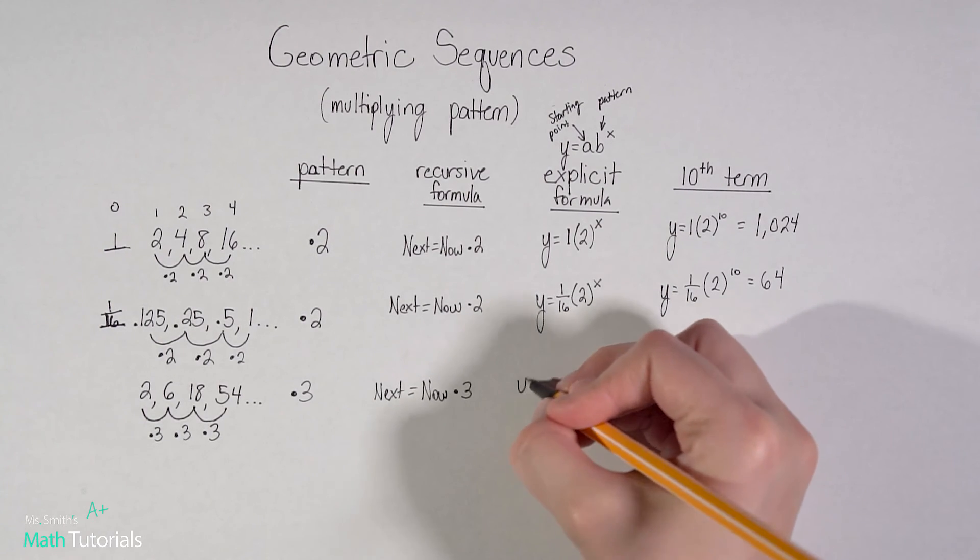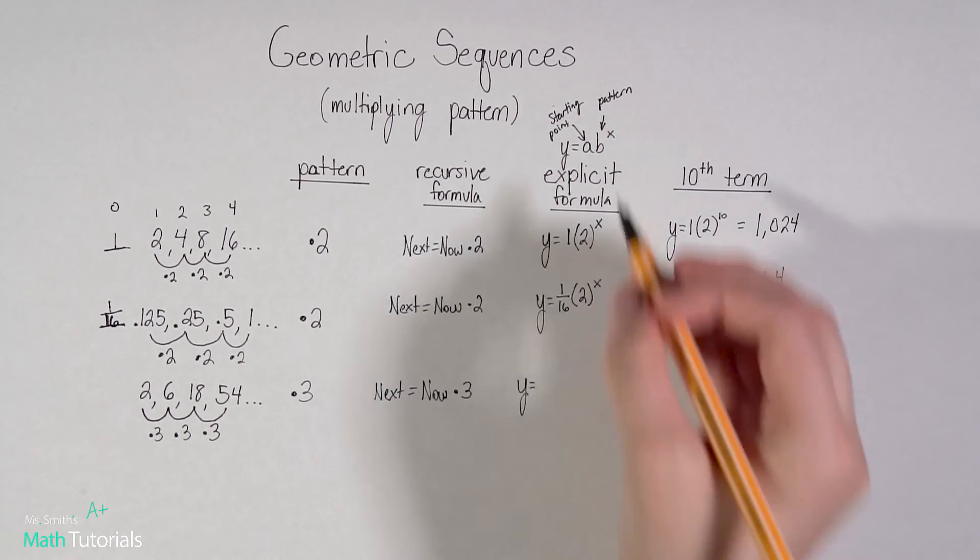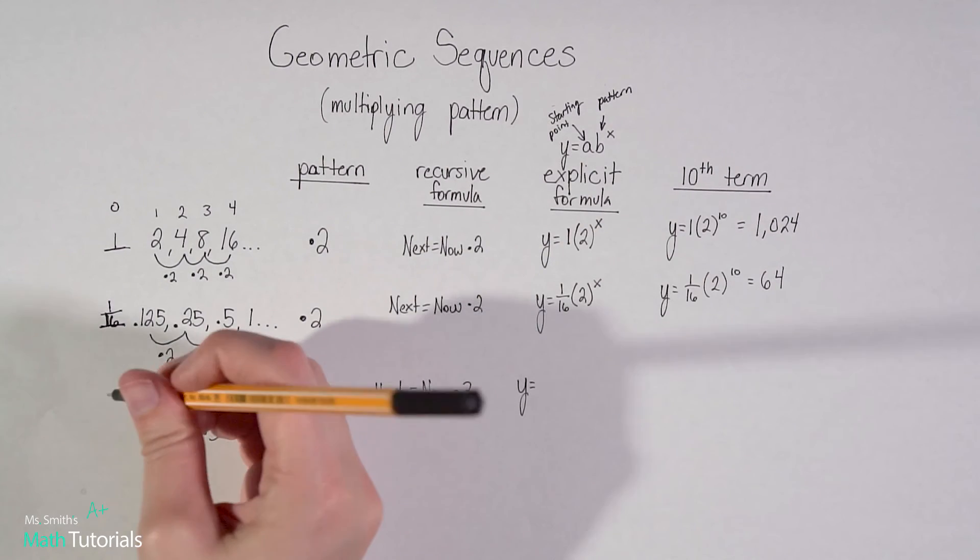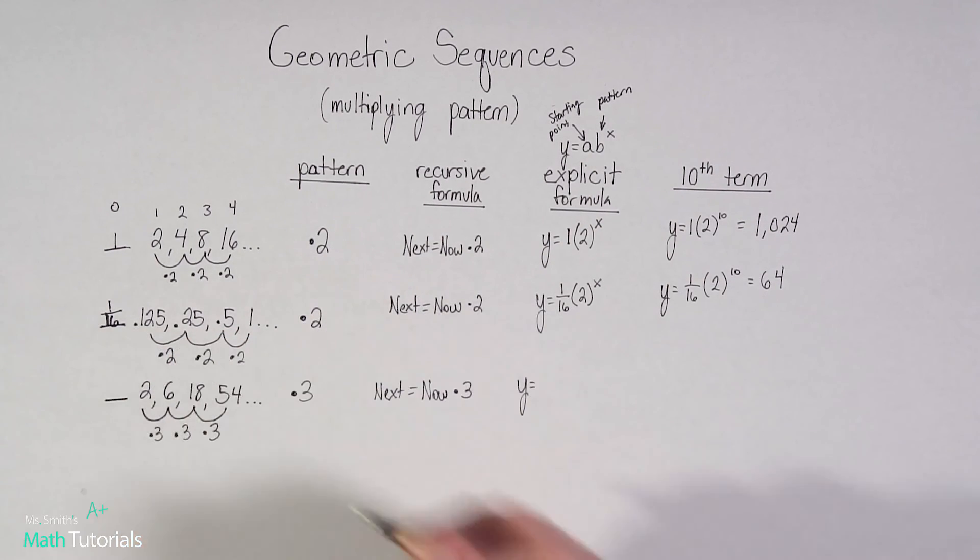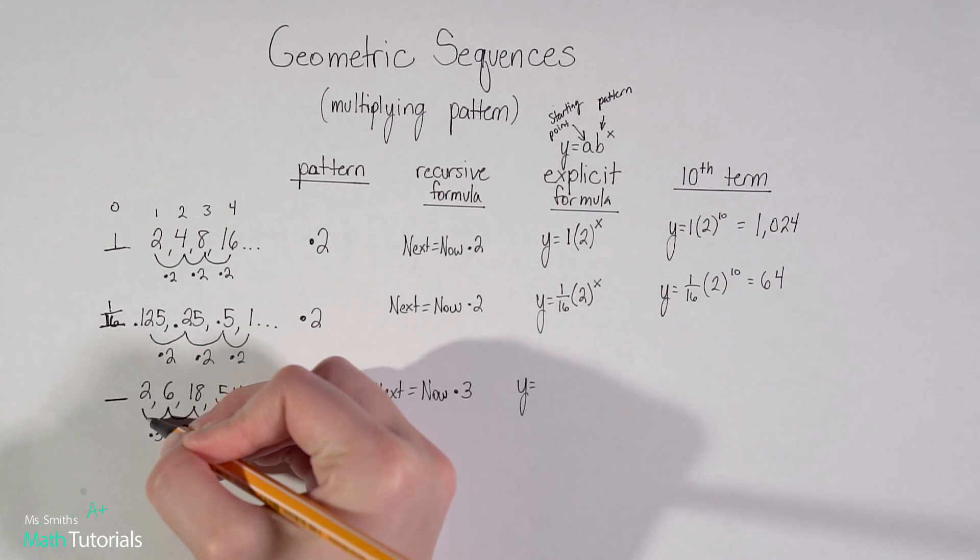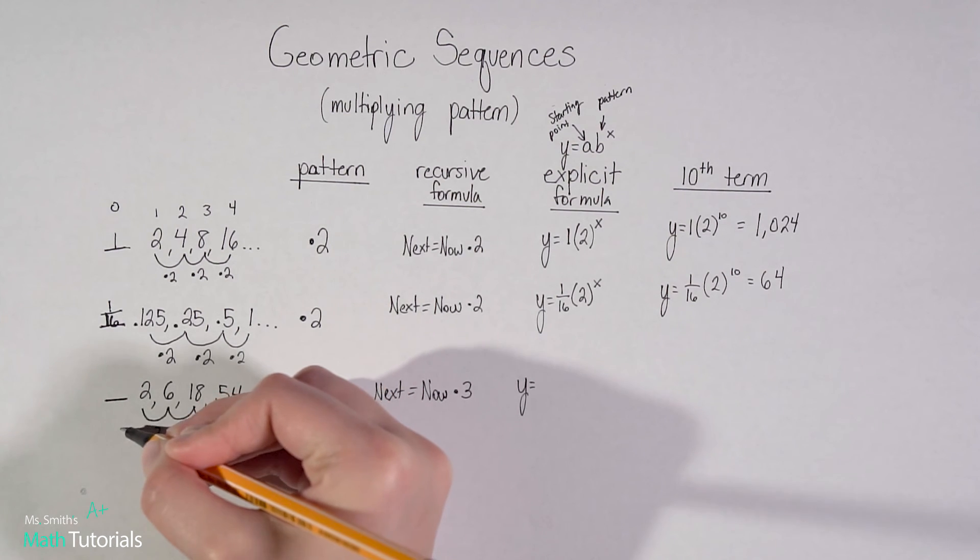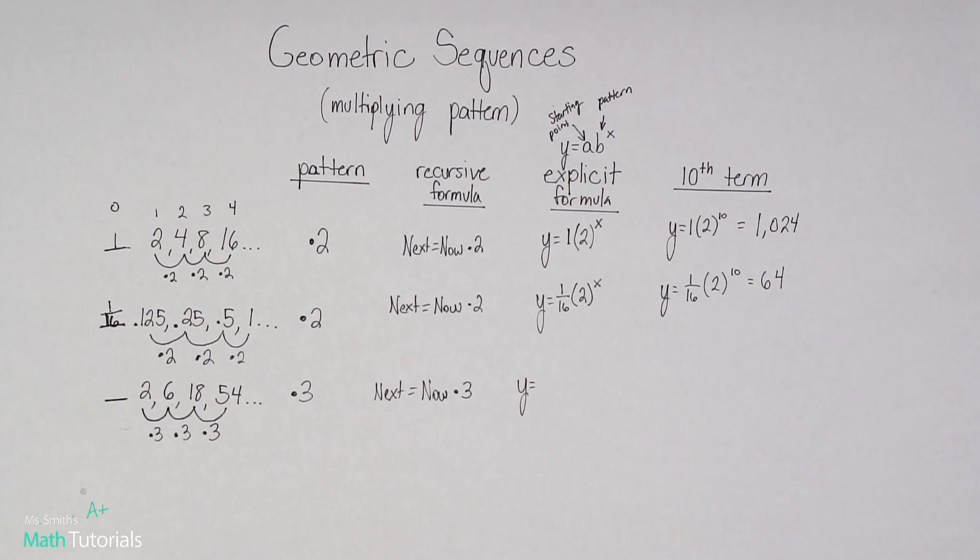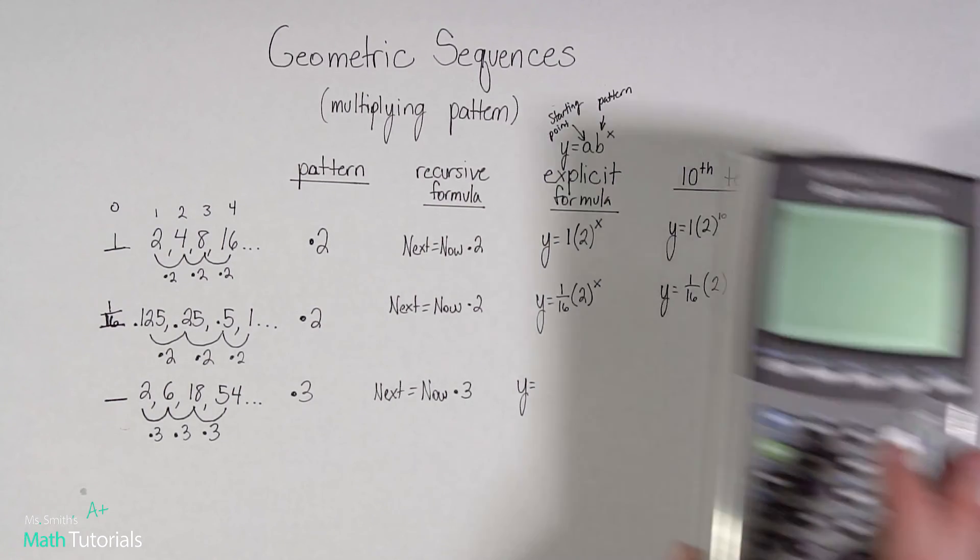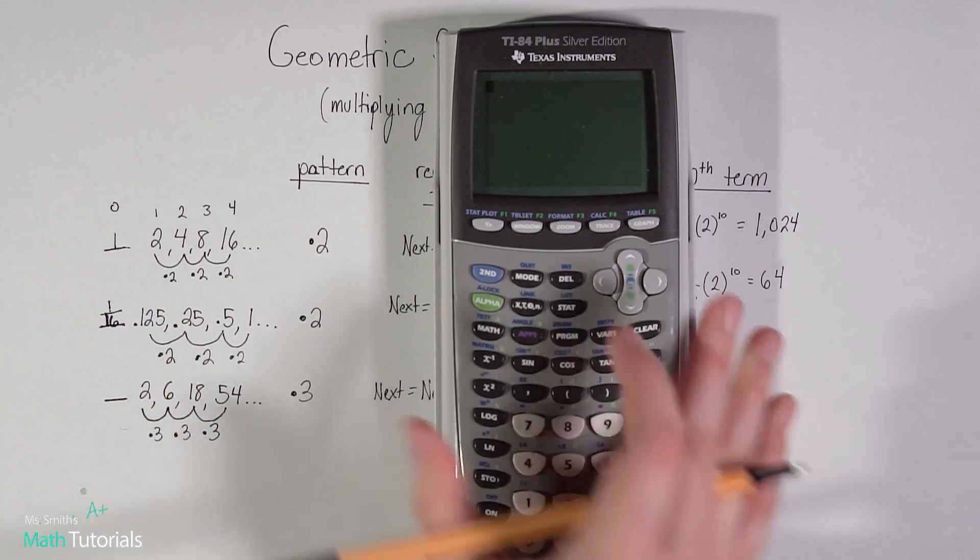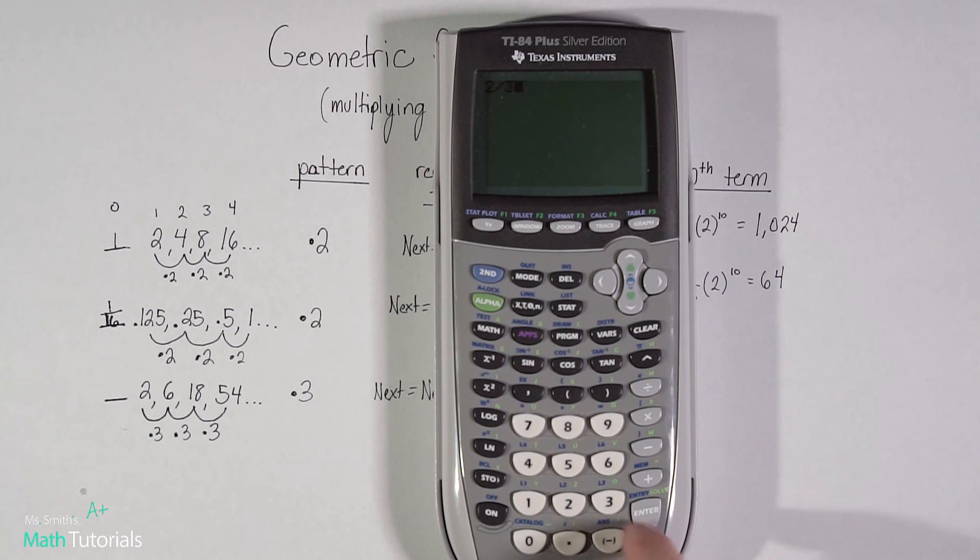So my pattern times 3. My recursive formula next equals now times 3. My explicit formula, y equals a is my starting point. So I would want to know what it would be here if there was something there. So instead of multiplying by 3, like I moved to the right with, I'm going to move to the left, and I'm going to divide by 3. So 2 divided by 3 would, I believe, be 2/3.